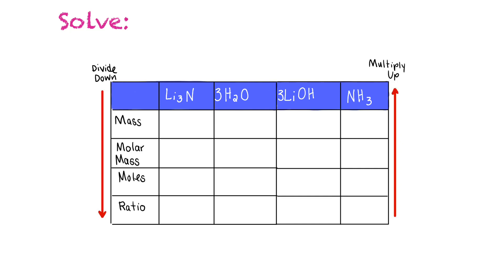To solve, we use the same table used for mass relationship equations. We put the masses in the table, divide by the molar mass to get moles, then divide by the coefficient to find the ratio. When finding the product, we multiply back up. Each column represents one of the reactants or products.